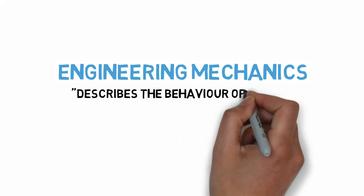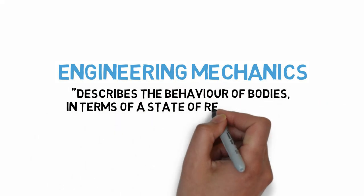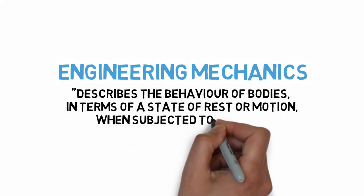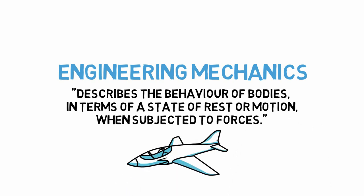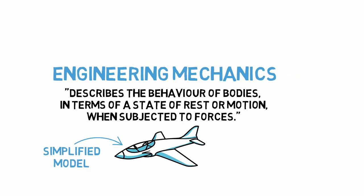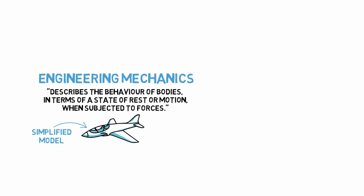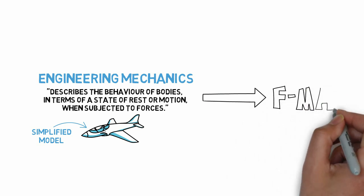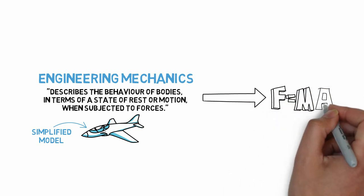We have covered that engineering mechanics is the field that describes the motion of bodies when subjected to forces and that engineers use simplified models to describe this behavior. Then why are there so many different courses on mechanics? Essentially, we start at the simplest case and slowly introduce more and more complexity into our models.